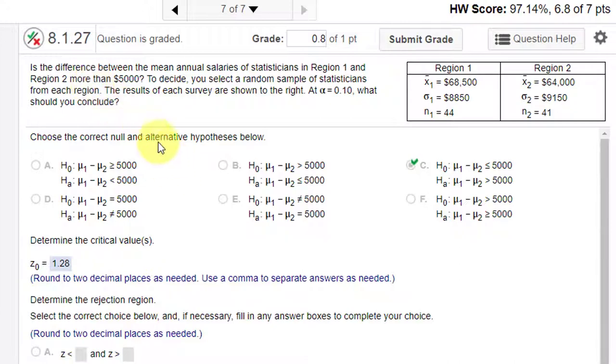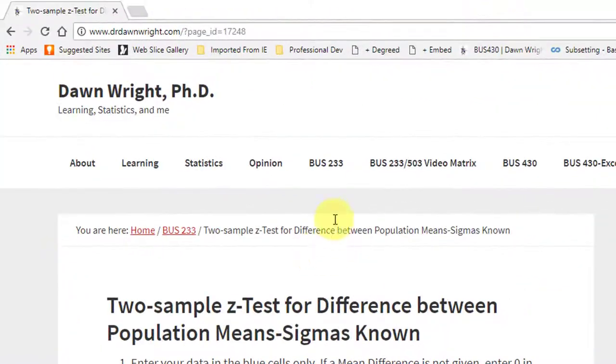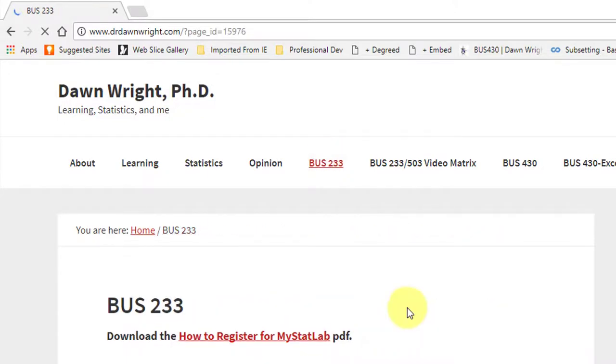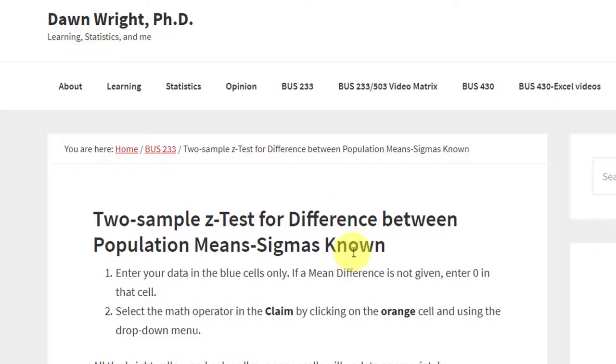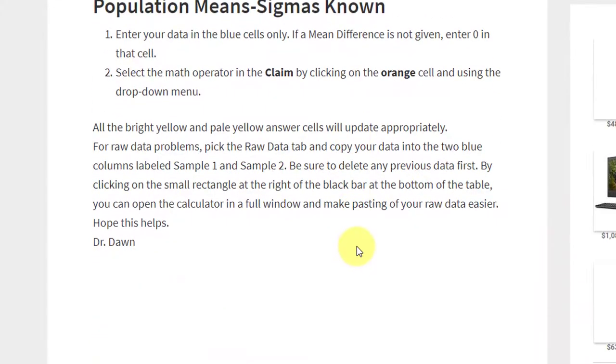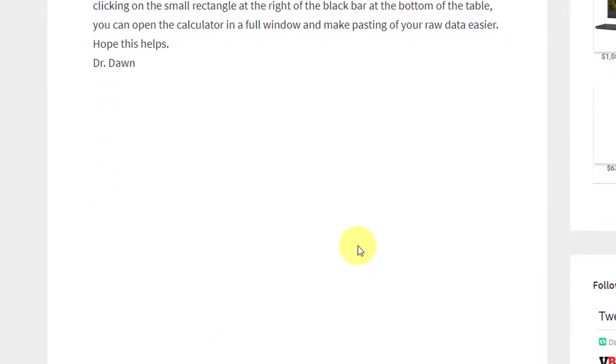We're going to solve this using the Excel calculator on my website, because it'll do it very quickly and easily. To find the calculators, if you're not using my video matrix, just go to my website, drdonwright.com, click on Business 233. It'll open up this list. We want the two sample Z test for difference between means, sigma known. I'm going to click on that, and it'll bring up the calculator.